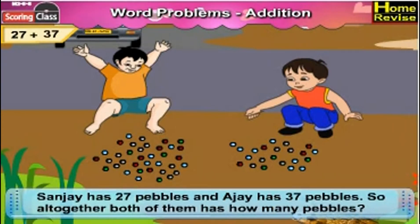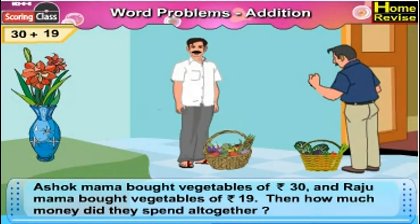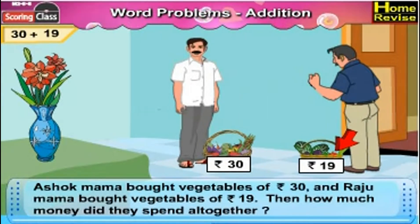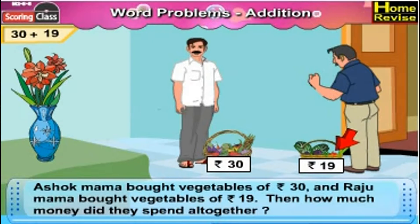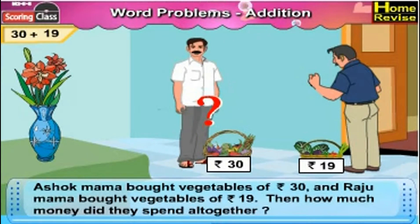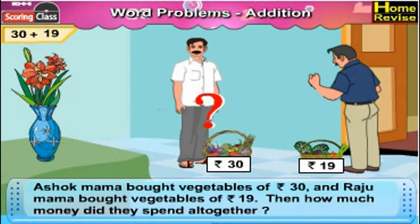Next is 30 plus 19. Ashok mama bought vegetables for Rs. 30 and Raju mama bought vegetables for Rs. 19. How much money did they spend altogether?